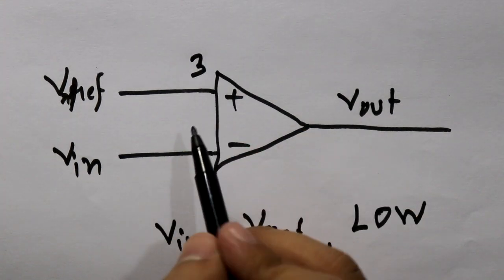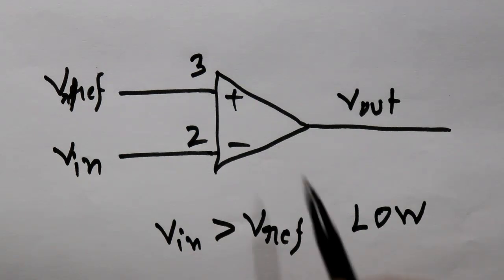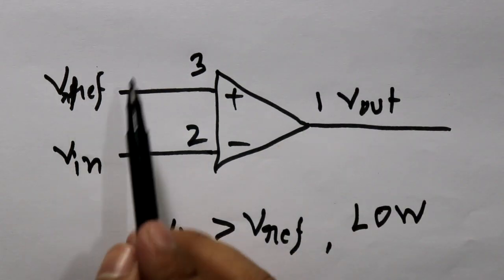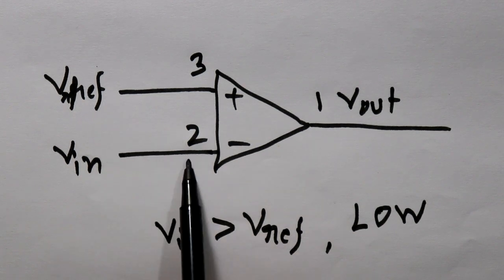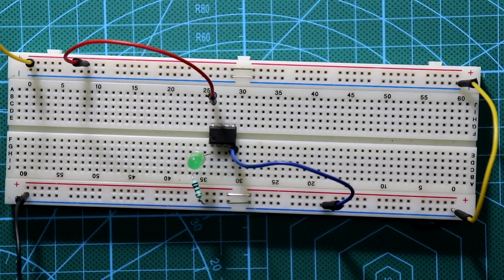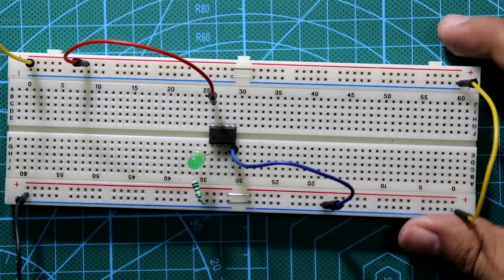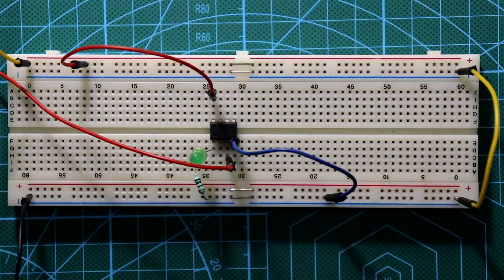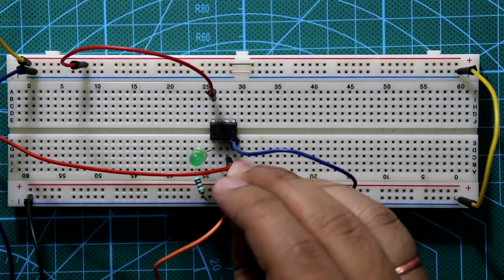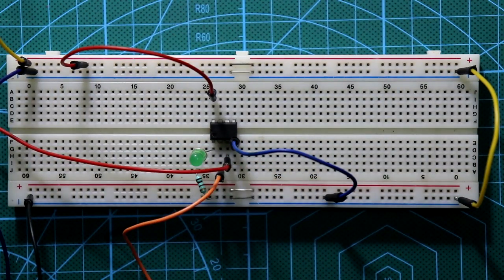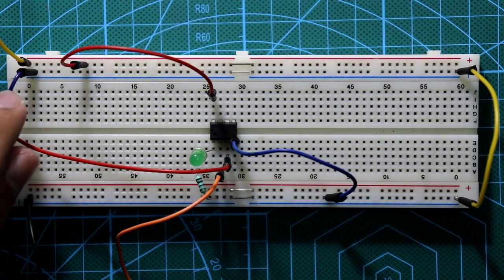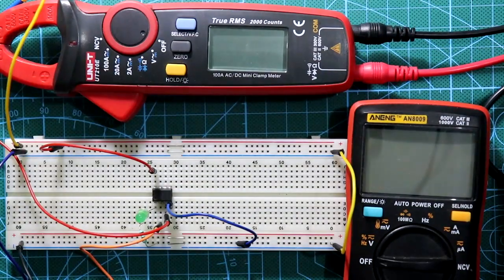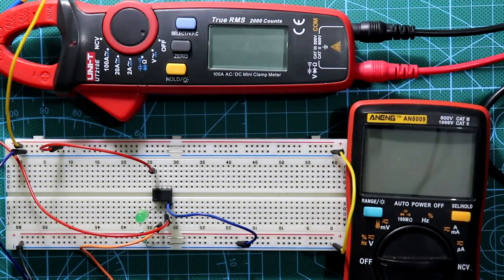The non-inverting pin is pin number 3 and the inverting pin is pin number 2, and the output is pin 1. Now we will connect the reference voltage to pin number 3 and the input voltage to pin number 2. I am providing 5.2 volts at pin number 3 and the input voltage to pin number 2, which is the inverting pin. This one is the ground.